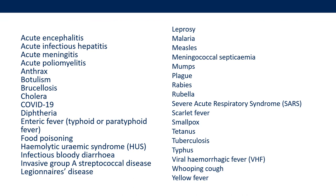Notifiable diseases must be reported to Public Health England. The list includes everything from acute encephalitis, diphtheria, haemolytic uraemic syndrome, legionella, malaria, rubella and yellow fever, among many others.